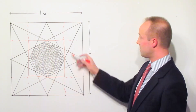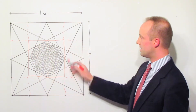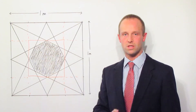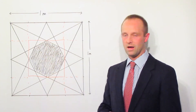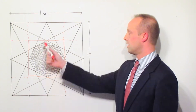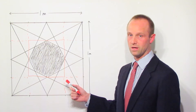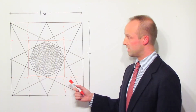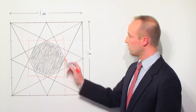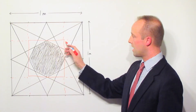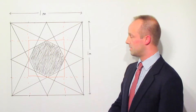We know that it must be half a metre by half a metre, and the total area has got to be half a metre multiplied by half a metre, which is a quarter of a metre squared. All we've got to do now is work out the area of these little bits.